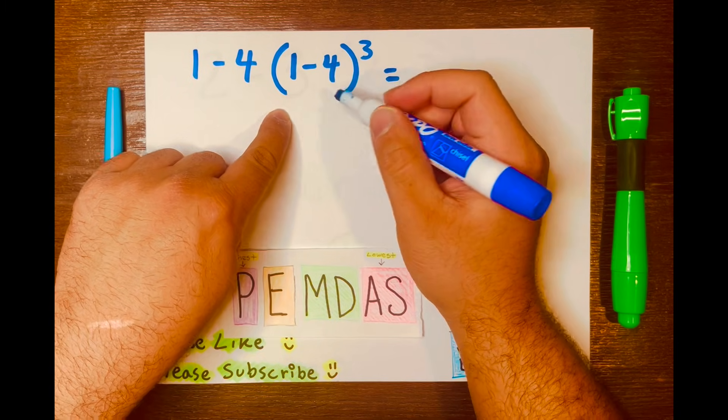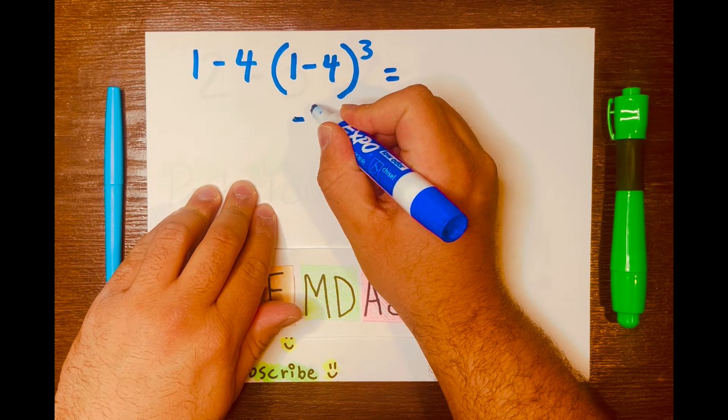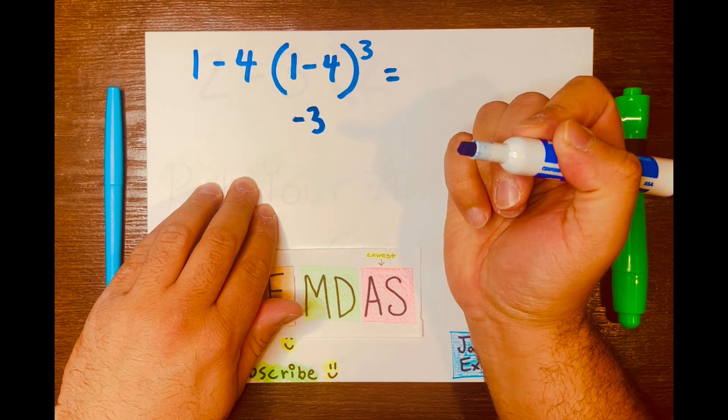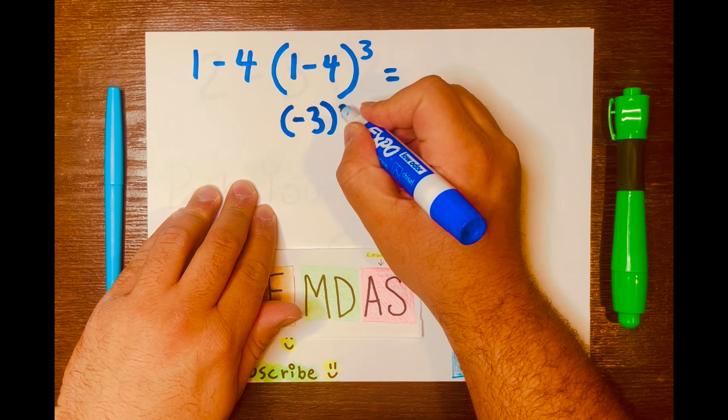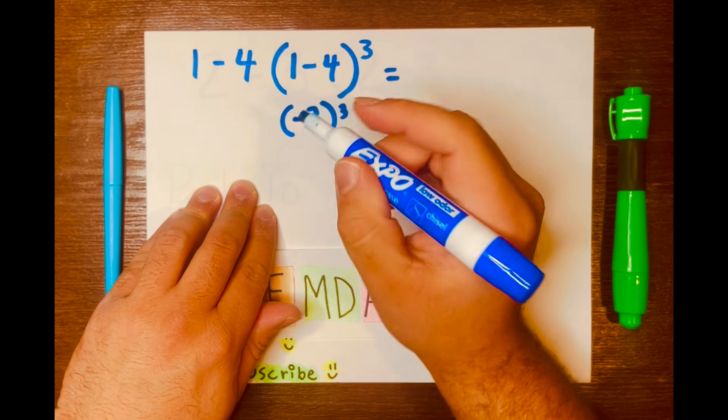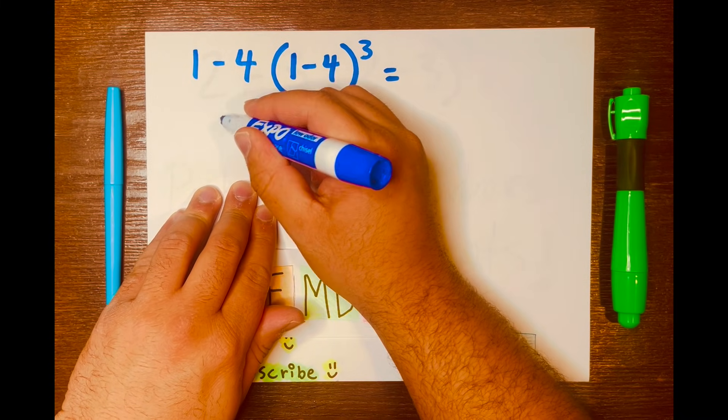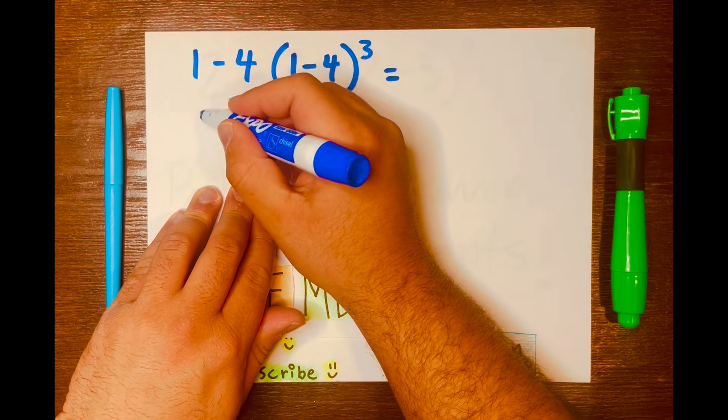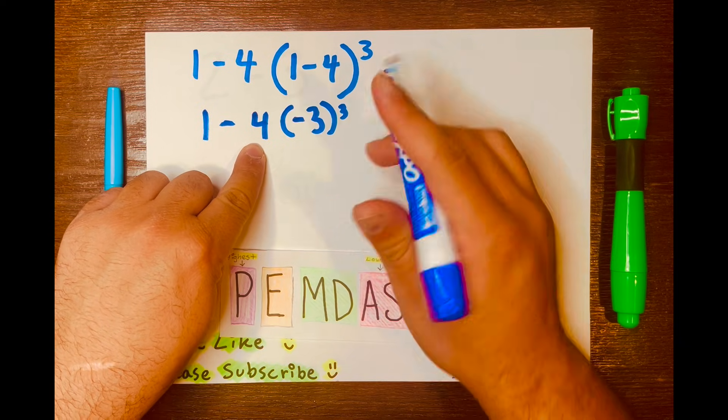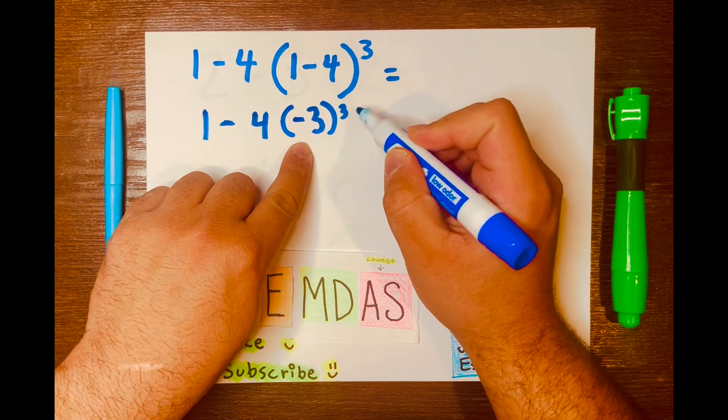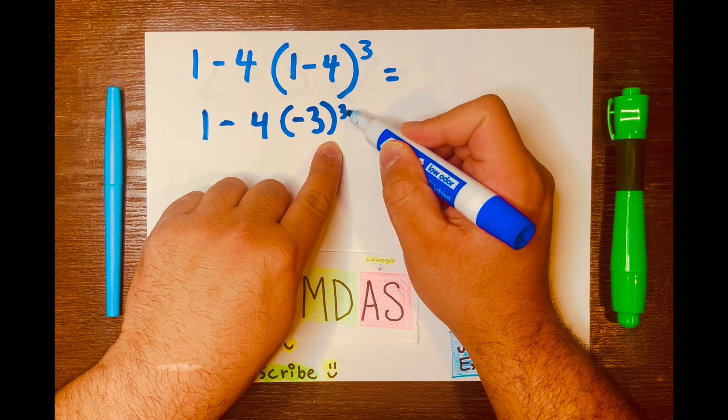1 minus 4 equals negative 3, right? And let's keep the brackets or parentheses, write the 3 right to the side, bring down the 4, the subtraction symbol down, and the 1 down. Now we have 1 minus 4 times negative 3 with an exponent of 3.